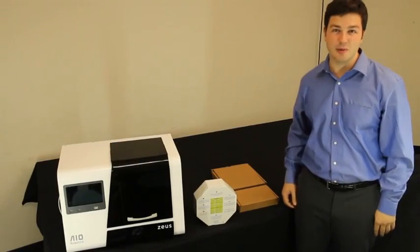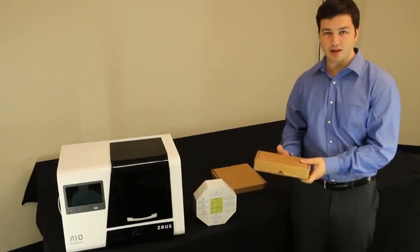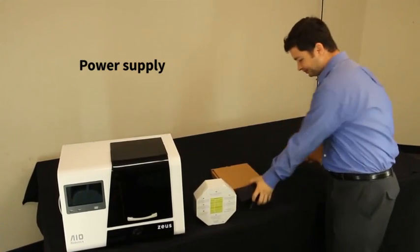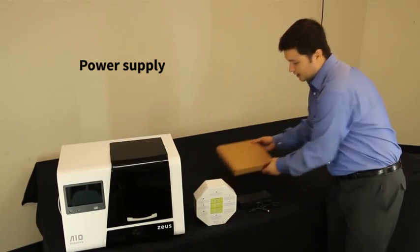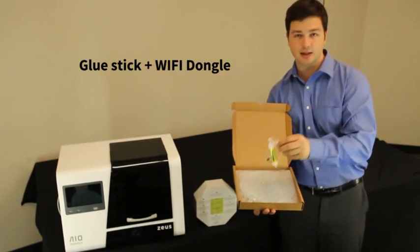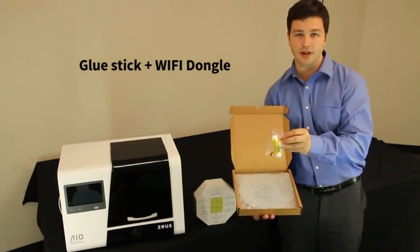Let's open the accessory boxes now. The first box, that's the power supply. It's a universal power supply. And the second accessory box, it has multiple items. Here's a little bag with a glue stick and the Wi-Fi dongle.